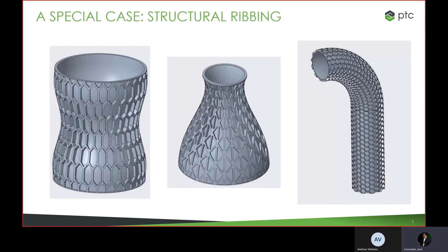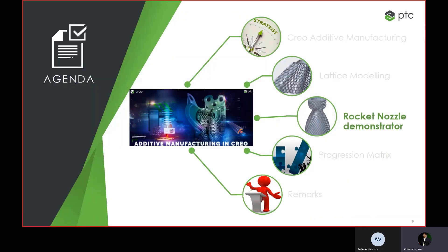There is one specific use case we want to highlight today: structural ribbing. In Creo it's possible to do this kind of structural ribbing — structures that reinforce thin-walled components and thin-walled designs. If you want to 3D print this type of part, there is a methodology in Creo to do that. It's not one button, not one command, but it's a methodology. Andreas's design will highlight the process and show how this can work. Andreas Vlahinos, thank you so much for joining us — your rocket nozzle demonstrator is very interesting. Please take control of the presentation.